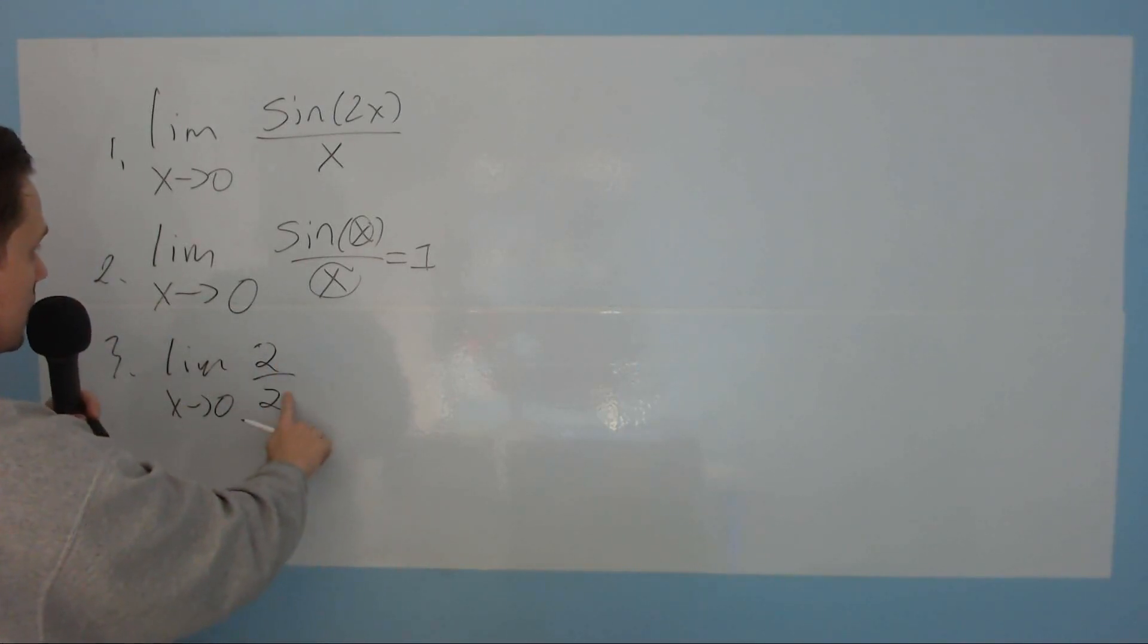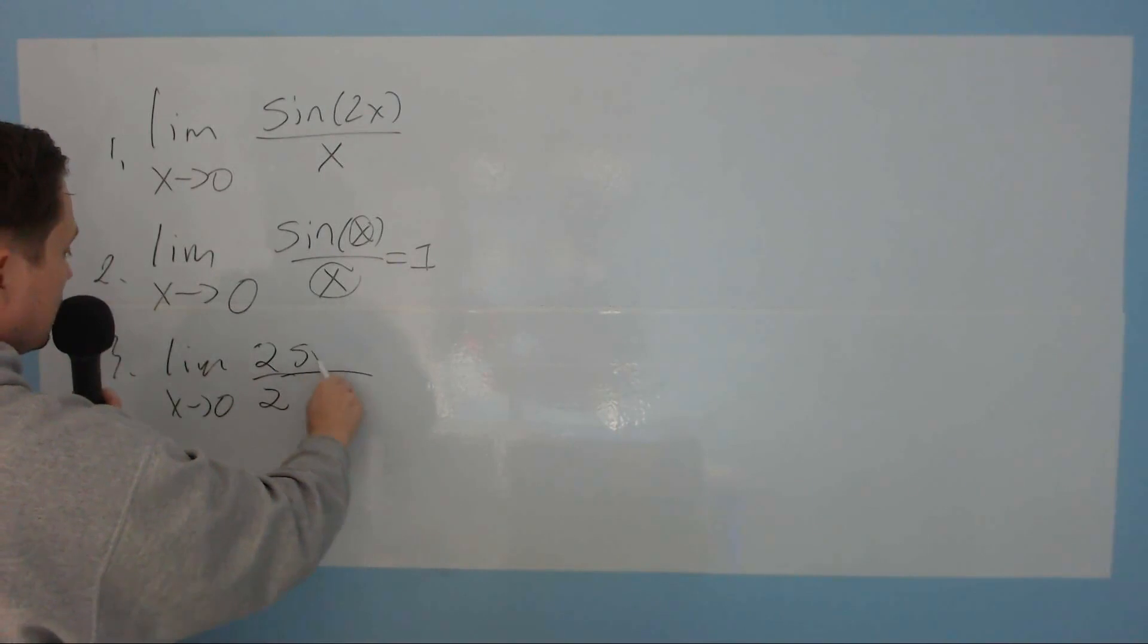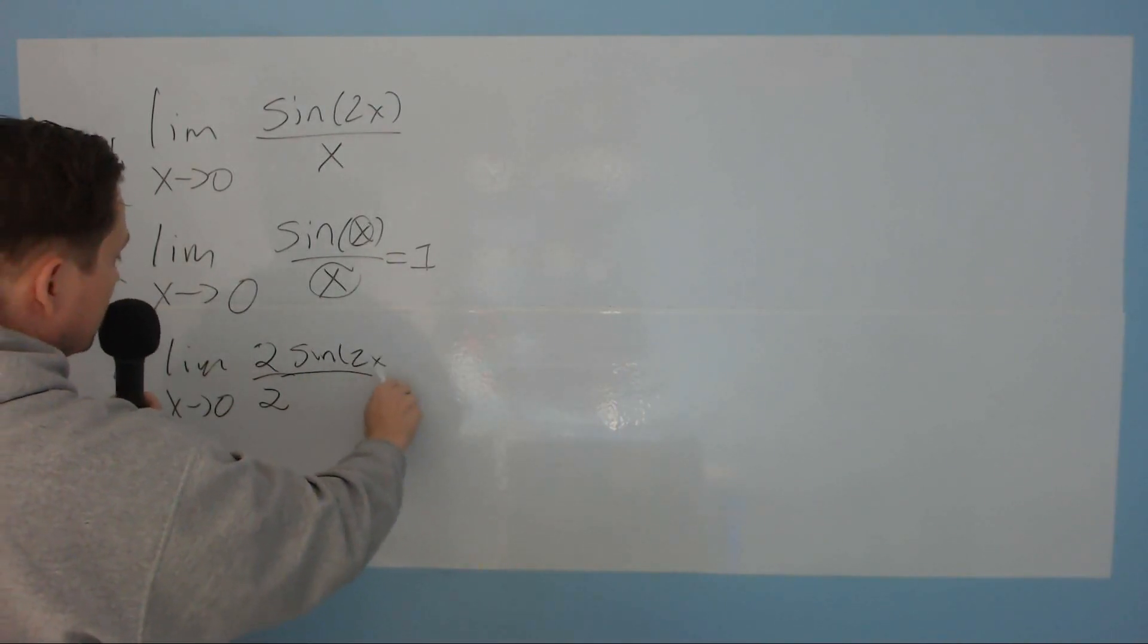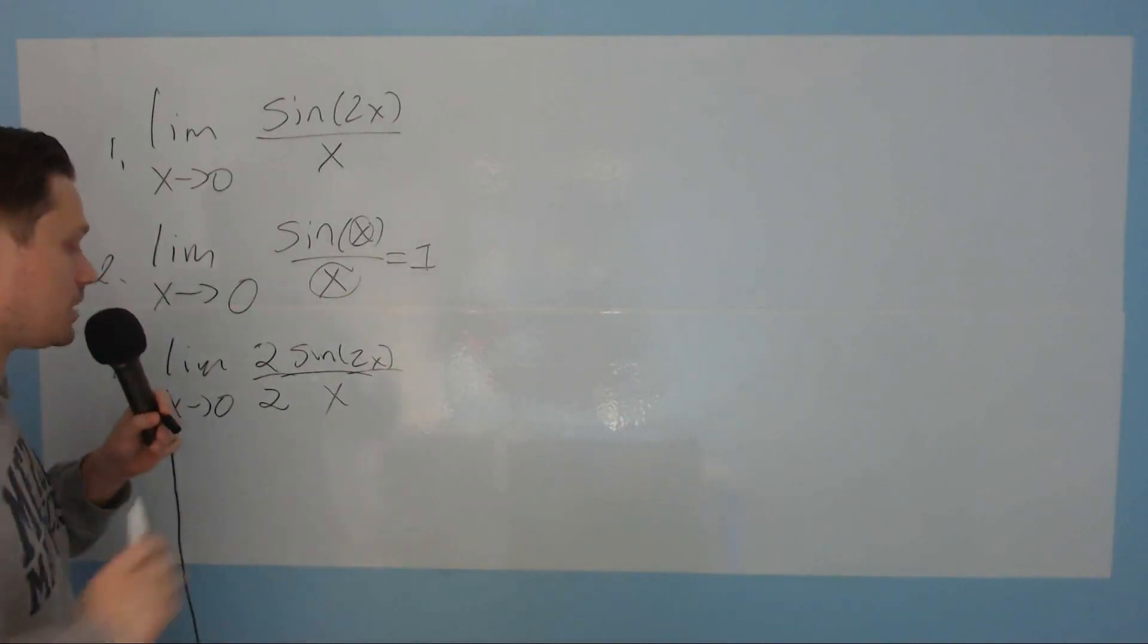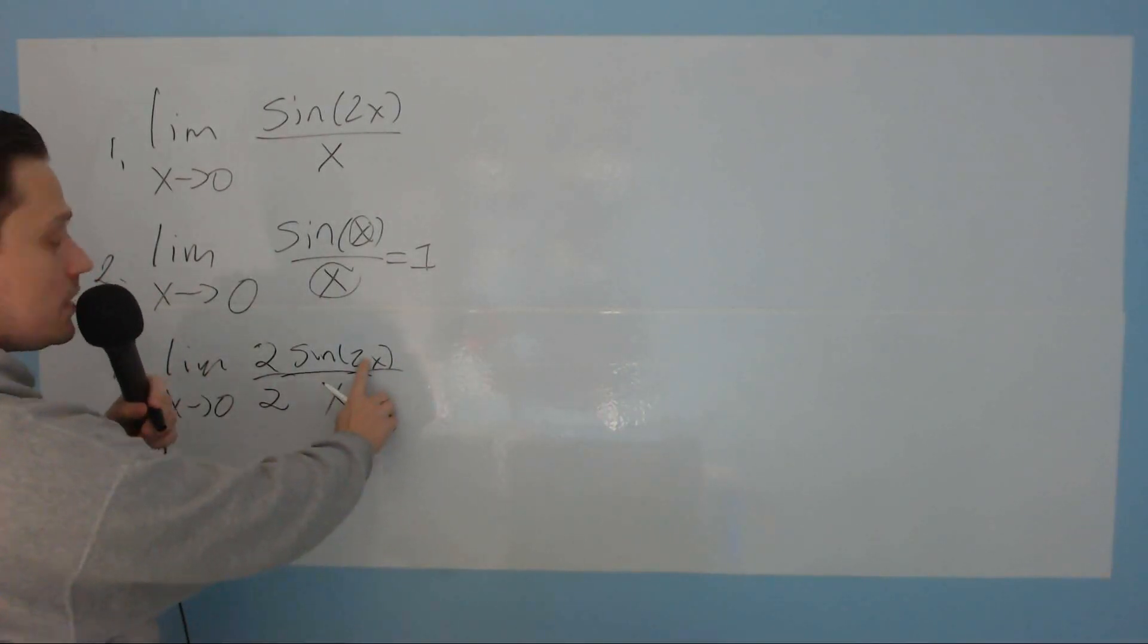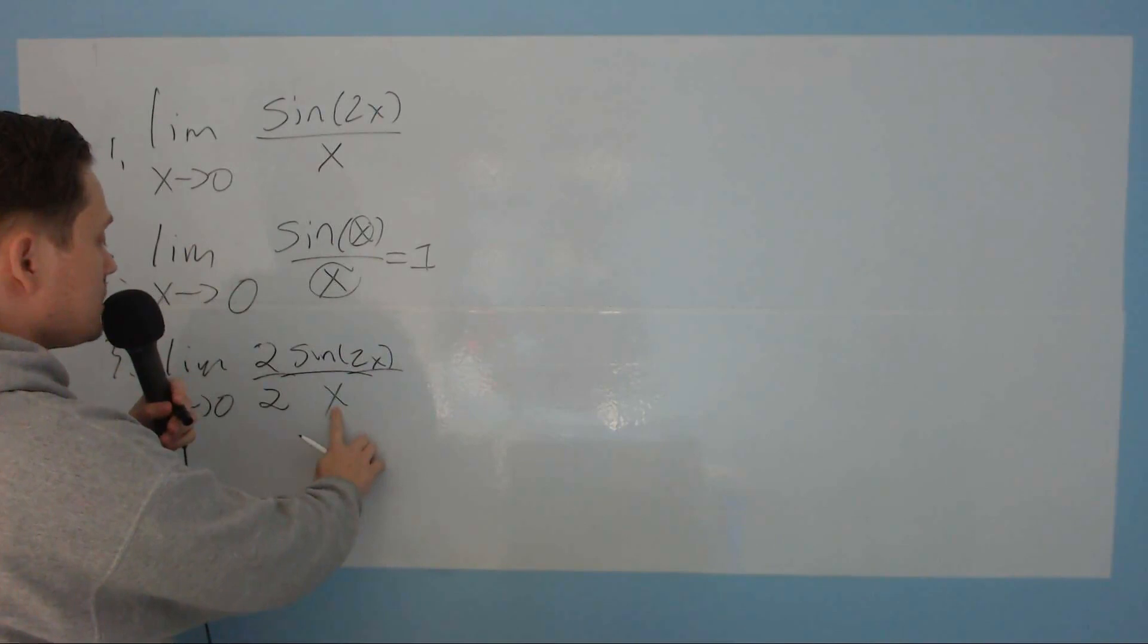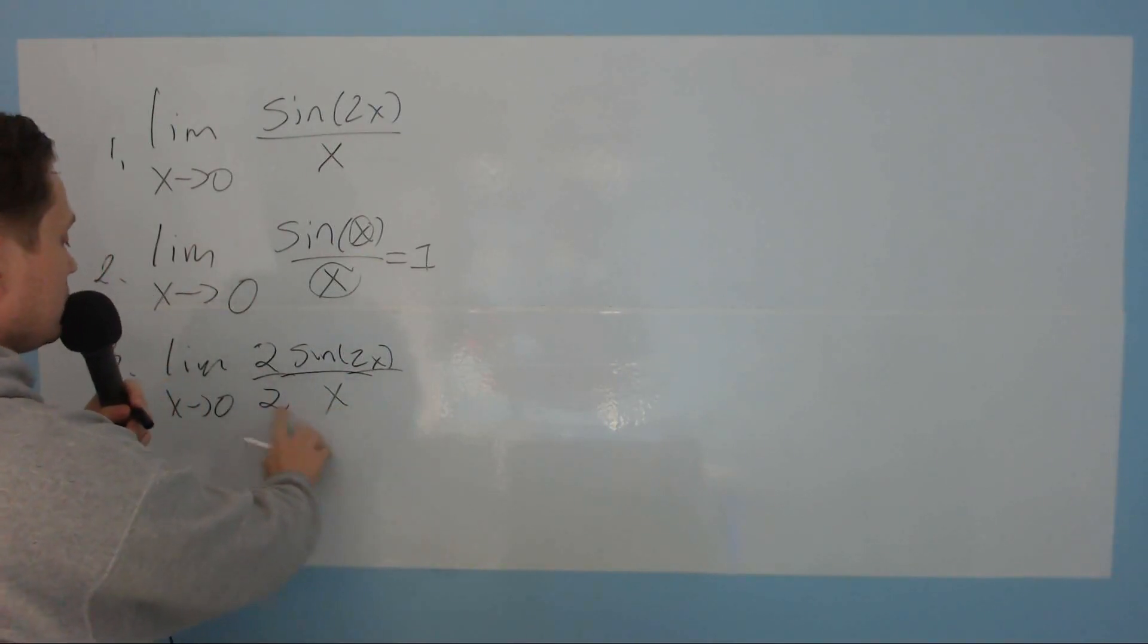So that's 2 over 2 in this case. You multiply by sine of 2x over x, and I'm getting closer to what I need. And I know that because now like this part over here, for example, is the same as this part over here with the 2. You see?